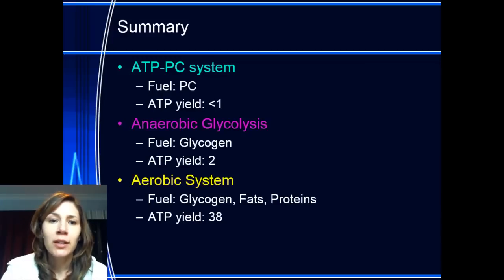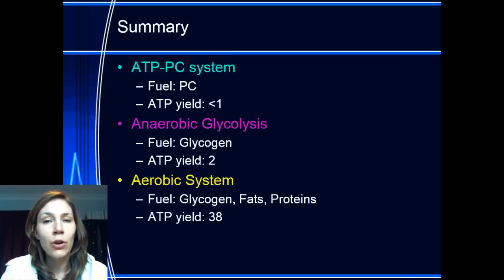So, just in summary, you've got the ATP-PC system. Its fuel is PC or phosphocreatine and it can barely create one ATP based off that fuel. So, the problem is it works really, really quickly, but you don't get a lot out of it and not for very long. So, 10 seconds tops. The anaerobic glycolysis, anaerobic meaning no oxygen present, glycolysis meaning using sugars. Its fuel is the glycogen, which is the stored fuel of sugar, and the ATP yield is 2 ATP. The aerobic system, on the other hand, is the most yielding energy system. It creates 38 ATP, but it can't do it very quickly, so it's at the cost of speed, and it can utilise glycogen, fats, and proteins. The proteins are the only ones we didn't discuss today.